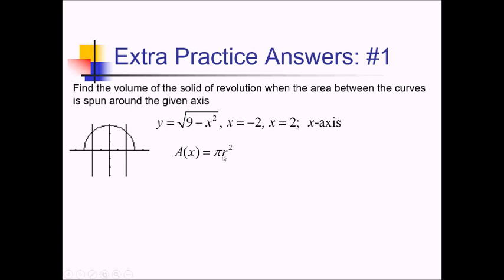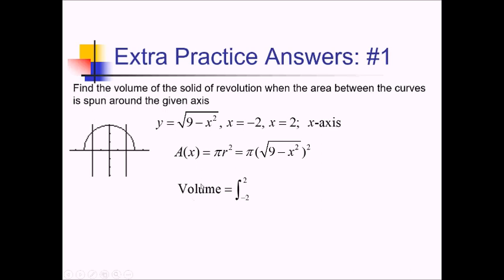The radius in this case is just the distance from the axis of revolution to the outer edge of our bounded region — from the x-axis to this curve up here, which is basically just this square root of 9 minus x squared function. So we're going to plug that in for r. In general, I'm going to be taking the integral from negative 2 to 2 to get my volume of this A of x. Don't forget the dx in there.